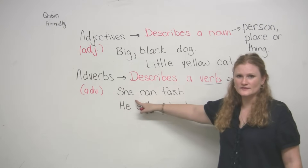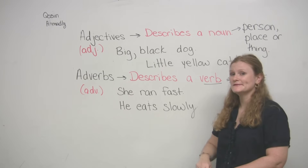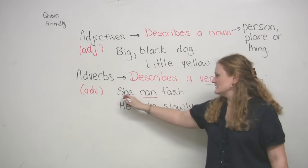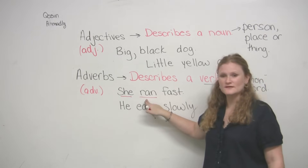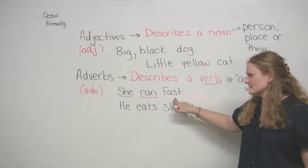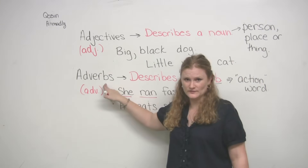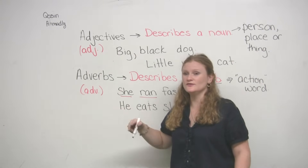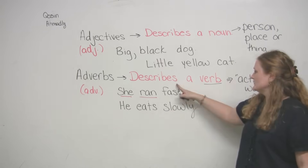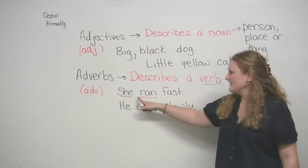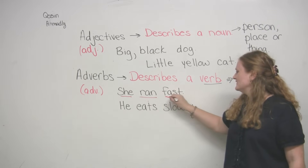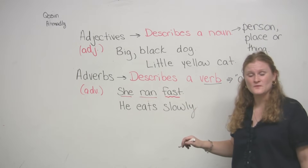Does anyone know where the verb is in this sentence? The answer is 'ran.' 'She' is my subject, 'ran' is my verb. And what's this? Fast. Fast is an adverb — it tells you how the person did the action, or it describes the verb. So you can ask yourself: how did she run? She ran fast.